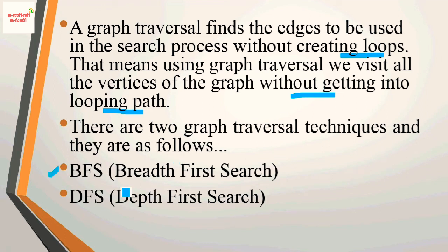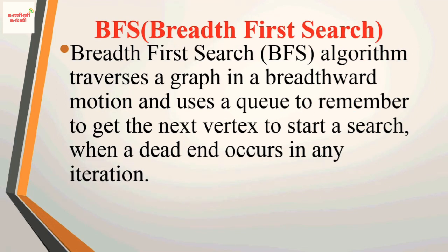There are two types of graph traversal: the first one is BFS, breadth first search, and the second one is DFS, depth first search. In this video, we will discuss BFS — breadth first search. The BFS algorithm traverses a graph in a breadth-ward motion, that is visiting from left to right, top to bottom.